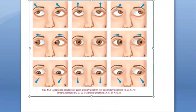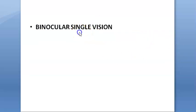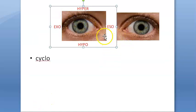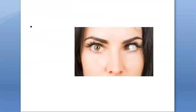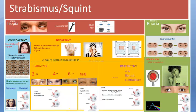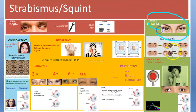We saw gazes — primary, secondary, tertiary, and cardinal gazes. Then we saw Hering's law and Sherrington's law. We saw that though we use two eyes we see only one image finally. Then we saw terminologies like eso, exo, hyper, hypo, cyclo, and examples of each. We also saw that in strabismus there are two types: heterotropia, where you can see the visual axis problem, and heterophoria, where you cannot see it.